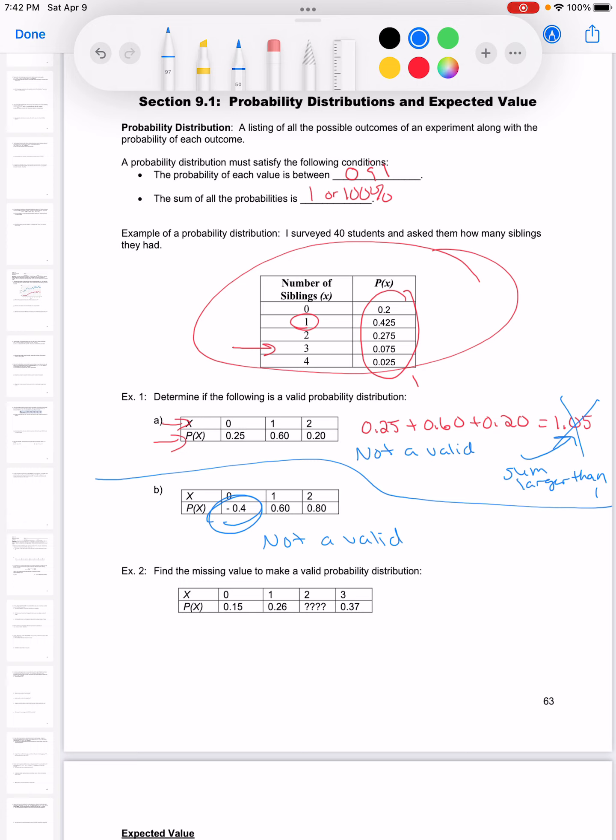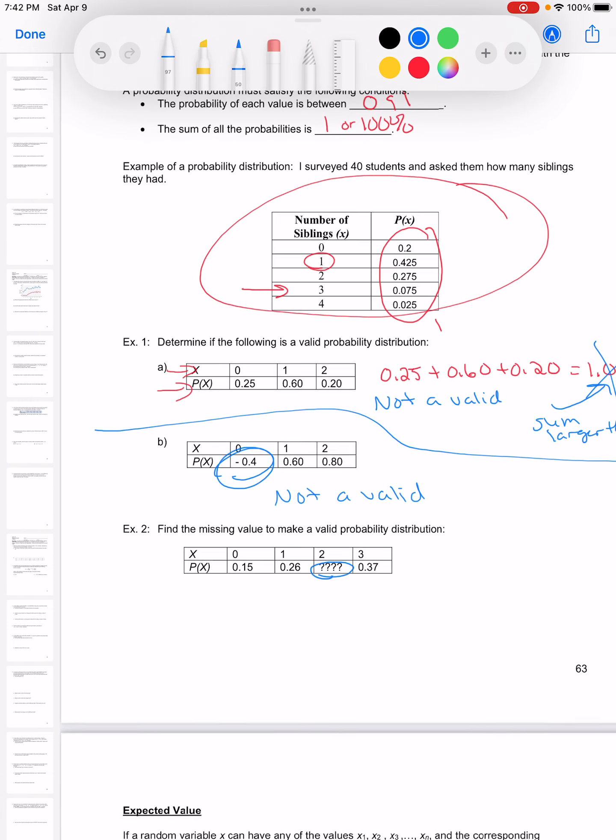Asking a similar question but wording it slightly different. On example two here, I've given you the probabilities except we're missing one. So I didn't tell you what that one was. But we do know that the sum of all the probabilities has to add up to 1.